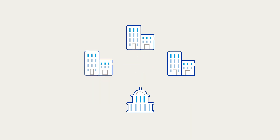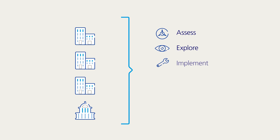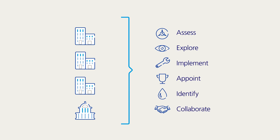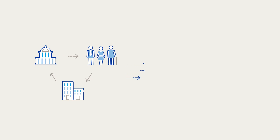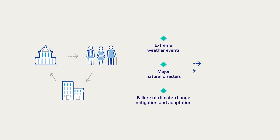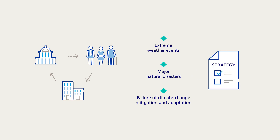To prepare for and wherever possible prevent future risks, businesses must assess, explore, implement, appoint, identify, and collaborate. Businesses, governments and societies need to work together to untangle the interconnectedness of environmental risks by implementing strategies that promote resilience and mitigating risks in ways that will lead to positive change.